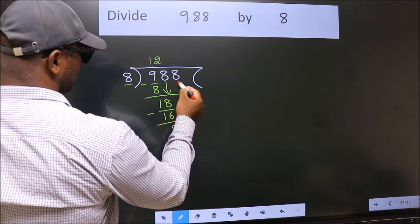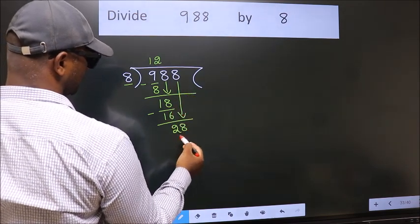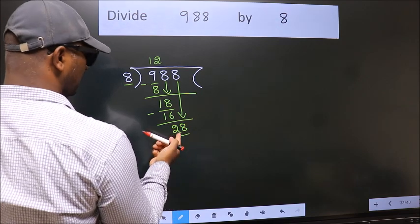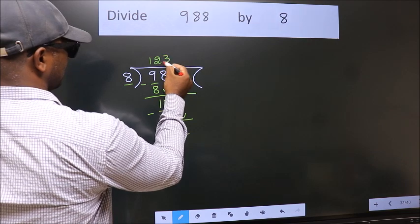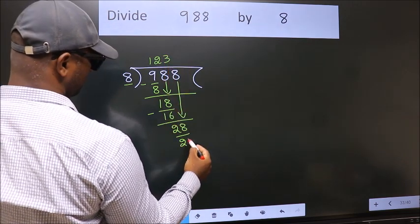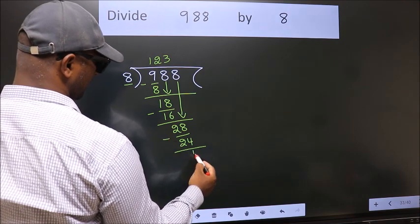After this, bring down the beside number. So 8 down. So 28. A number close to 28 in 8 table is 8 threes, 24. Now we subtract. We get 4.